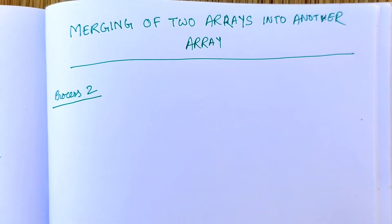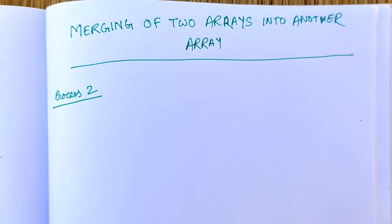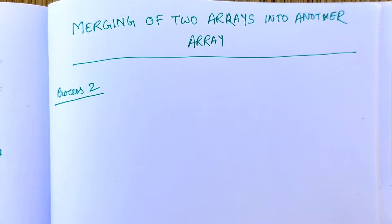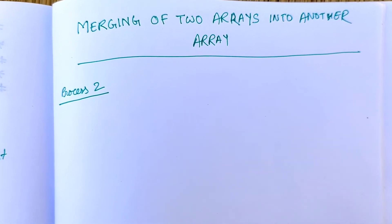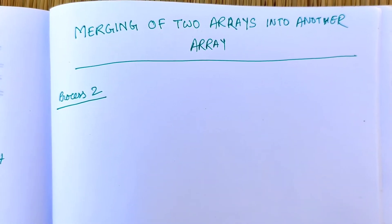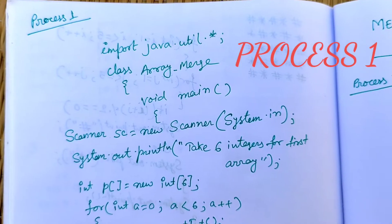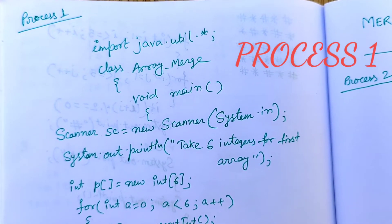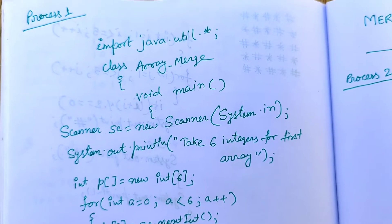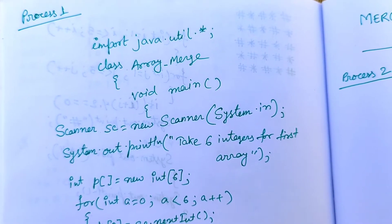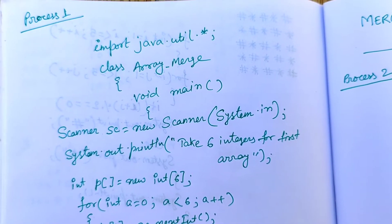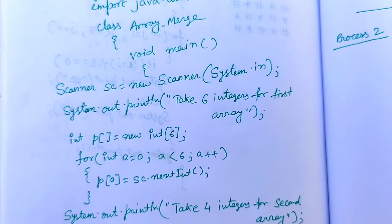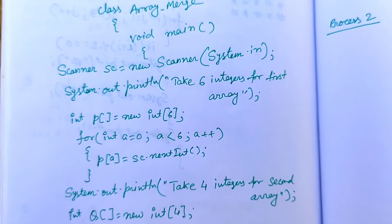Now we will learn merging of two arrays into another array. We have two processes and we will learn both one by one. In process one, suppose the first array has six elements and the second array has four elements.